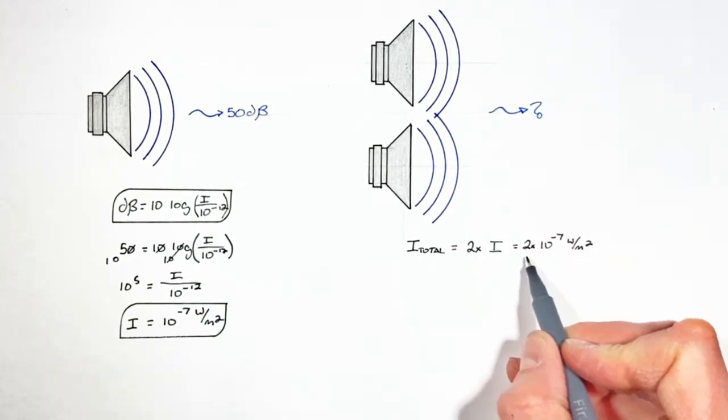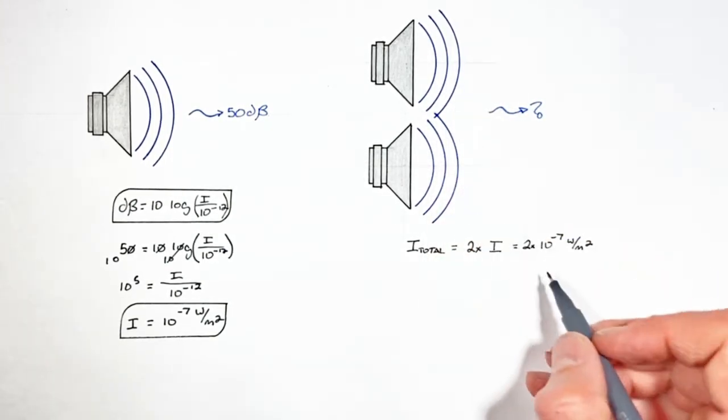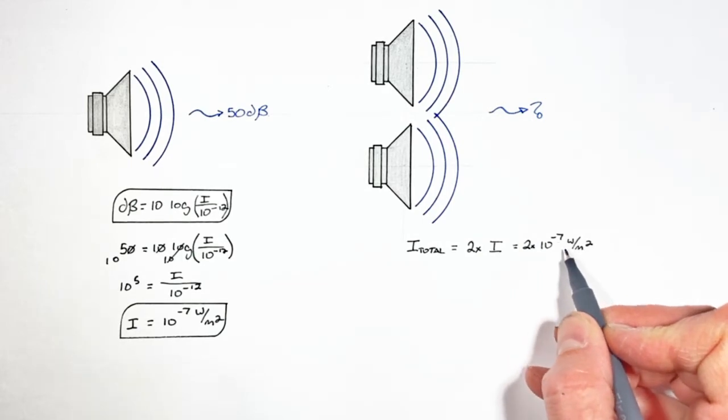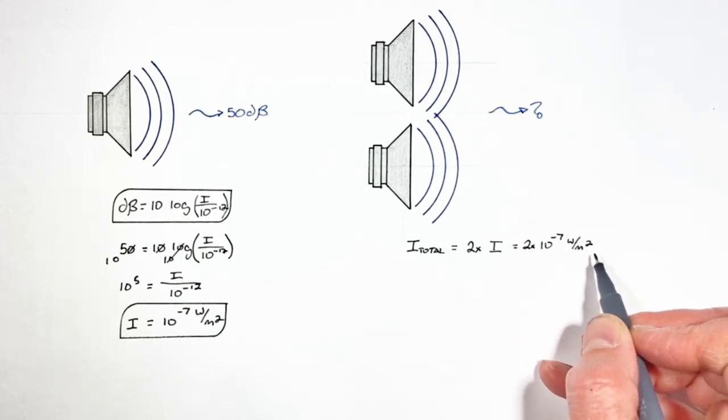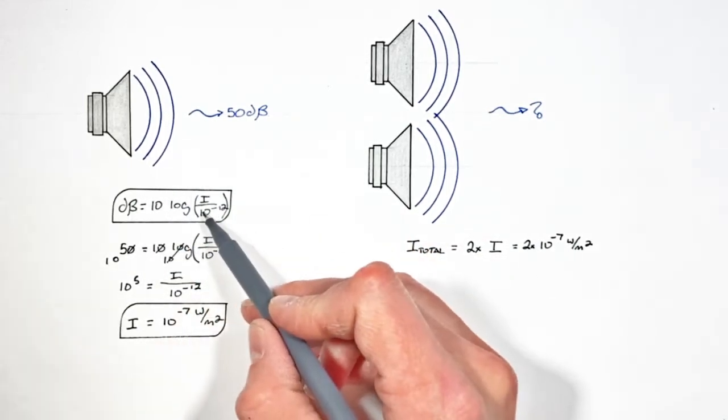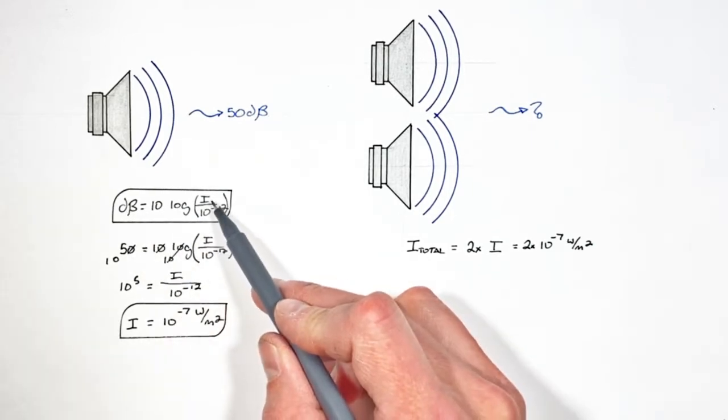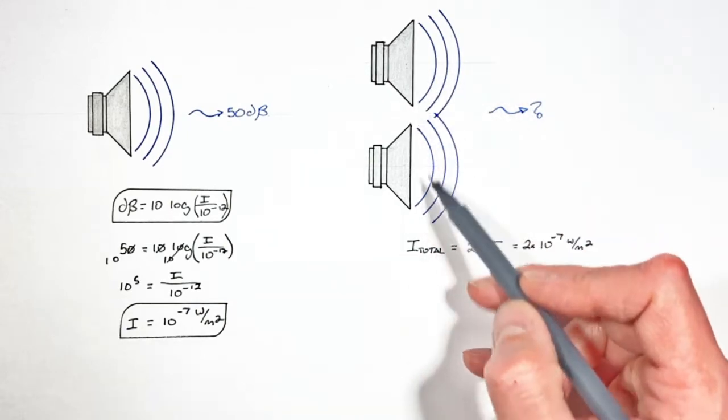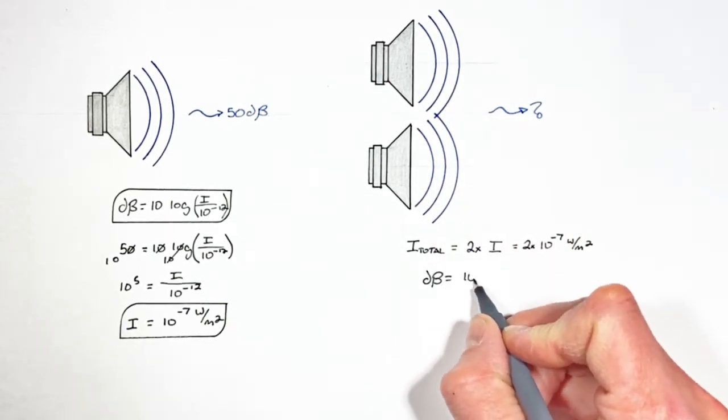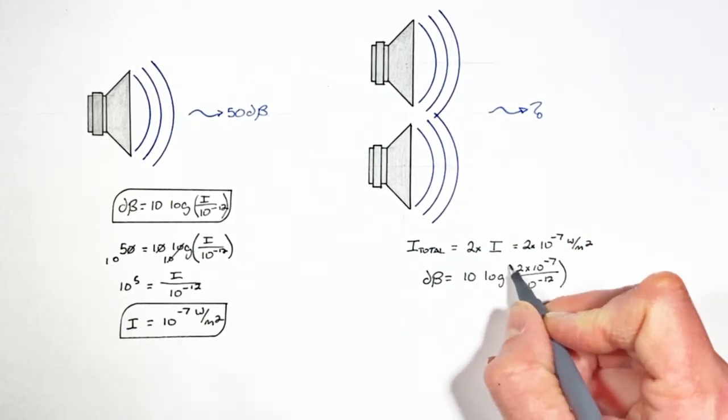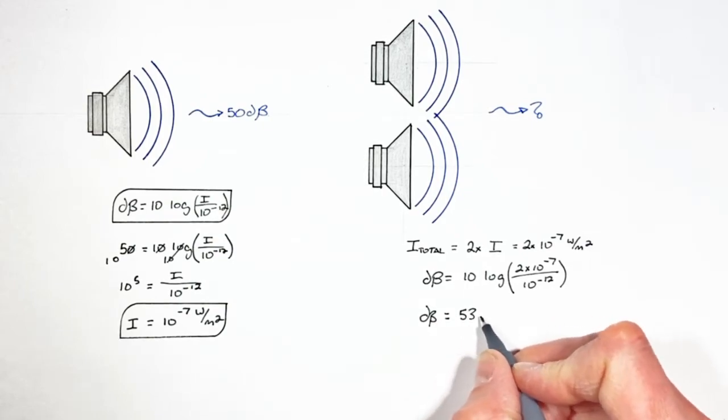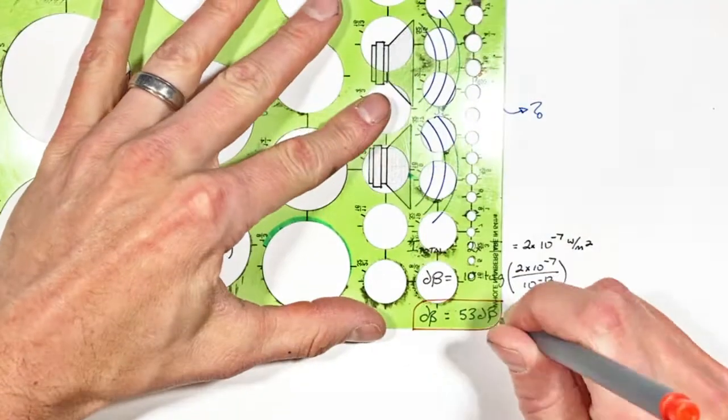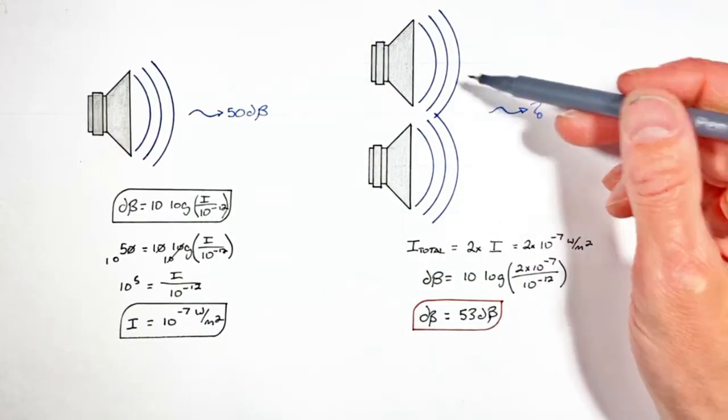So knowing the total intensity from both of these speakers is going to be two times 10 to the negative 7 watts per meter squared, we can go back to our original equation relating decibels to intensity to solve for the decibels heard some distance away from these two speakers. We find there's 53 decibels of sound produced by these two speakers.